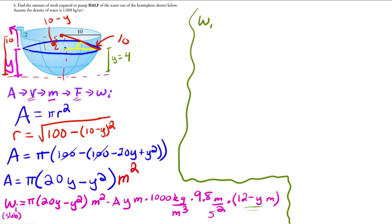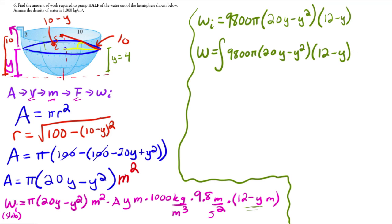But anyways, if I simplify this, I'm going to get 9,800 pi times (20y minus y squared) times (12 minus y) with respect to y. Oh, I forgot my delta y here. Remember that turns to dy as delta y goes to 0.